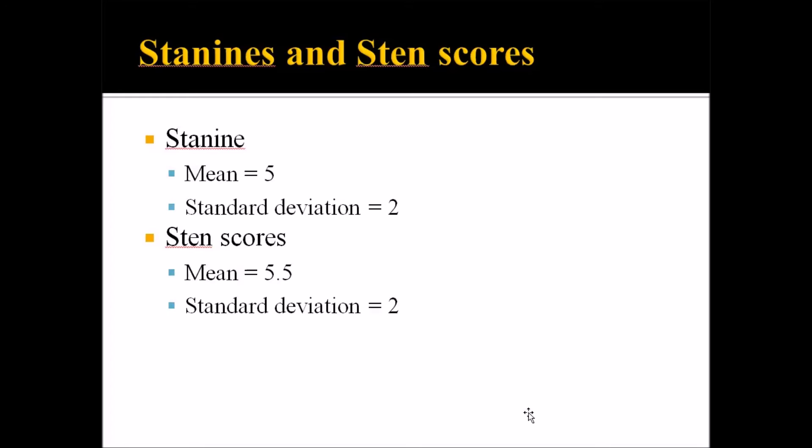So taking a look at a couple other types of scores, the STA9 and the STEN. STA9 is short for standard 9. It has a standard score and the value can range from 1 to 9. The mean is equal to 5 and the standard deviation is equal to 2. The STEN score is short for standard 10, and it has a range from 1 to 10 with a mean of 5.5 and a standard deviation of 2. Now one of the main criticisms about the STA9 and STEN scores are that they don't provide a lot of detail about the performance of an individual who takes an assessment because the score is converted in such a limited number of units. The STA9 score is widely used in educational settings.